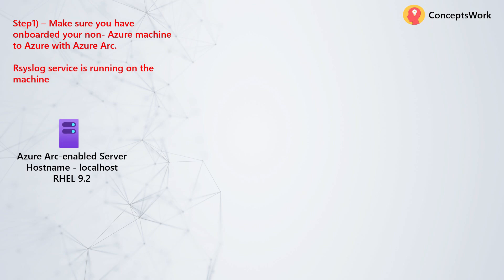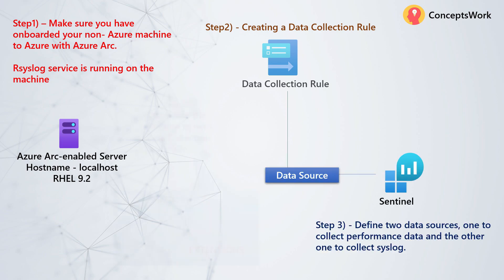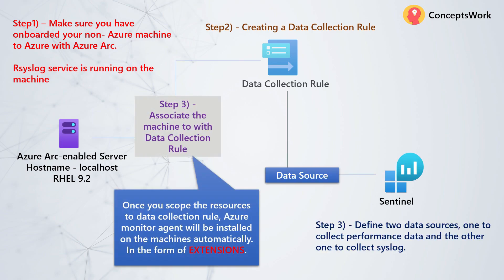Step number one is to make sure that you onboard the machine to Azure with the help of Azure Arc. Assume this is my machine which is in my on-prem environment, and from here I want to collect syslog data that should be available in my Sentinel console. The very first thing I will do is onboard the machine with Azure Arc, and then verify whether the rsyslog service is running on this machine.